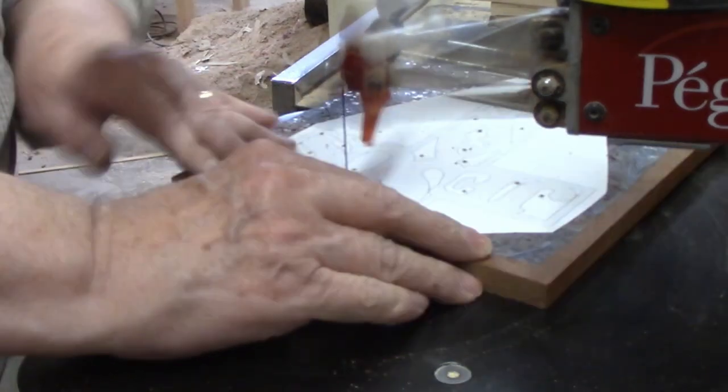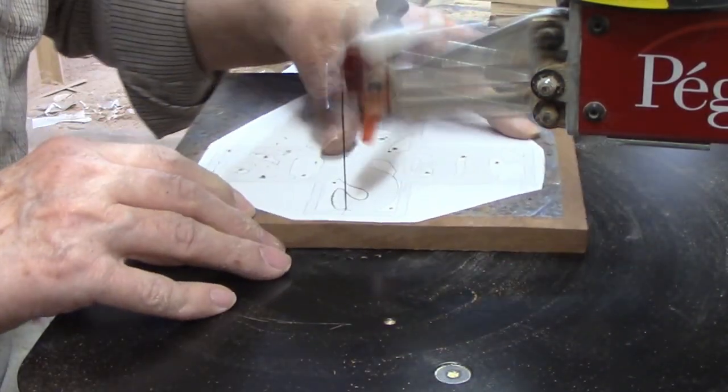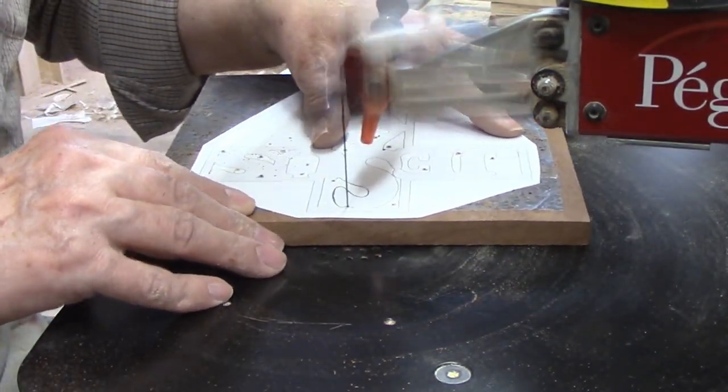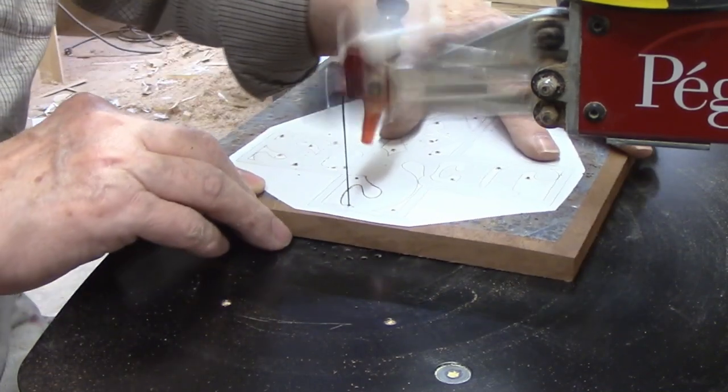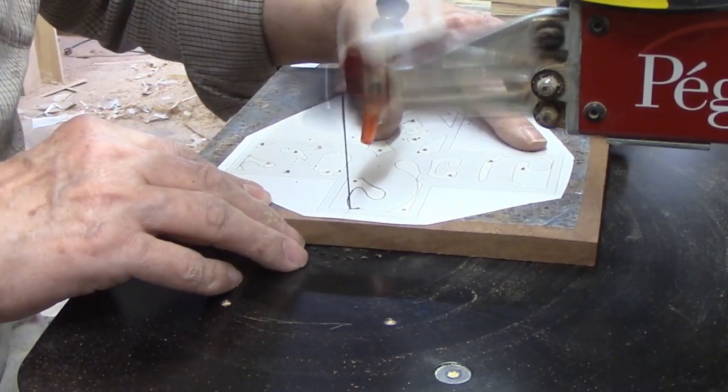As I've gained experience with the scroll saw I've learned what blades can and cannot do. Once you know what can be done and you've gained some experience you can look at odd shapes and quickly determine the best way to cut them.